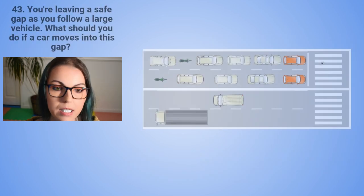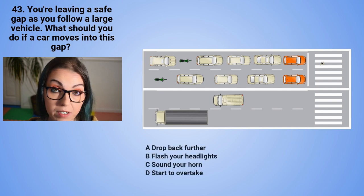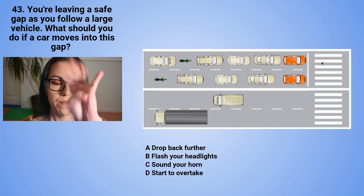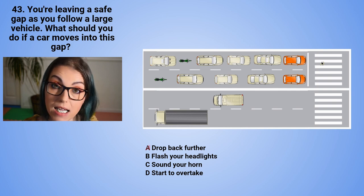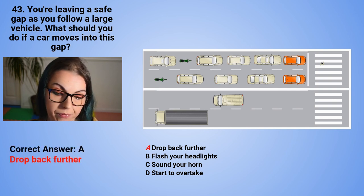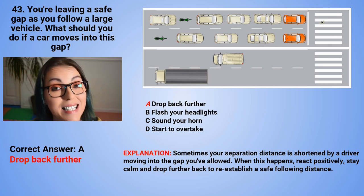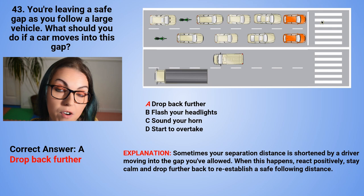Question 43: You are leaving a safe gap as you follow a large vehicle. What should you do if a car moves into this gap? A. Drop back further. B. Flash your headlights. C. Sound your horn. Or D. Start to overtake. The correct answer is A — drop back further. Sometimes your separation distance is shortened by a driver moving into the gap you've allowed. When this happens, react positively, stay calm, and drop back further to re-establish a safe following distance.